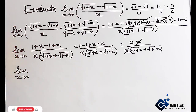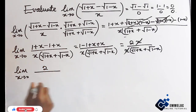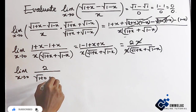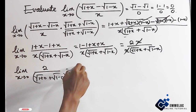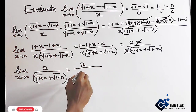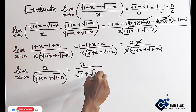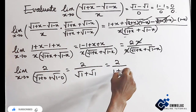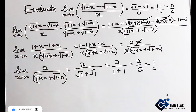We can now plug in the limit as x tends to 0. We get 2 over the square root of 1 plus 0 plus the square root of 1 minus 0, which is 2 over the square root of 1 plus the square root of 1, giving us 2 over 1 plus 1, which equals 2 over 2, which is 1.